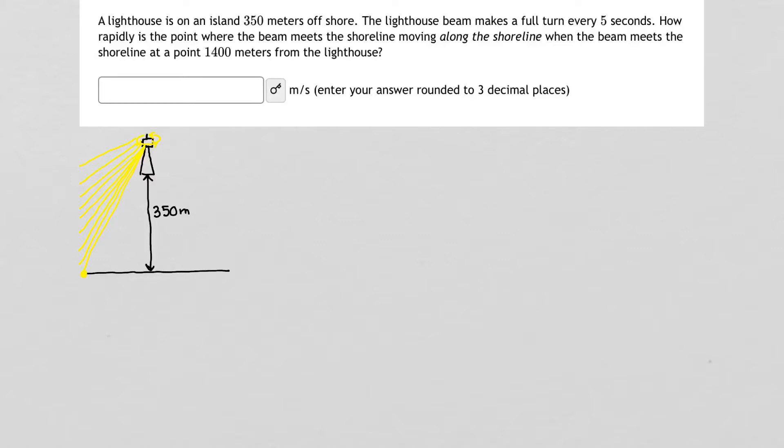So what's being asked is how rapidly is this point moving along the shoreline? So we're asking how fast is that moving along the shoreline because as the light turns that point will get closer and closer to the straight distance that I have labeled 350.